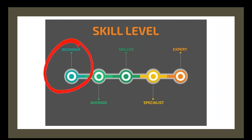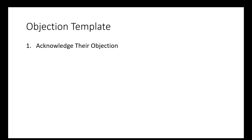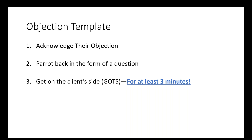But there is a way to use this as a beginner, and it still works extremely well. It's the same template. Can everybody on the call acknowledge somebody's objection? Can you say absolutely, or you're right, or 100% agree? Yes. Can everybody then pair it back in the form of a question just by adding 'isn't it,' 'wouldn't it,' 'couldn't it,' 'shouldn't it'? You basically repeat back what they say, and 100% of you can do that.